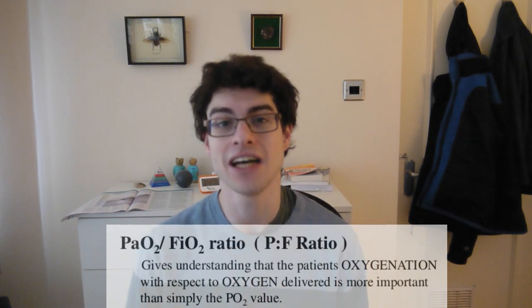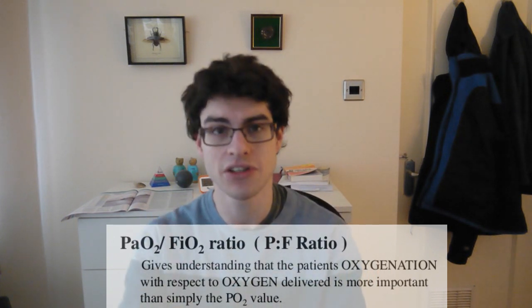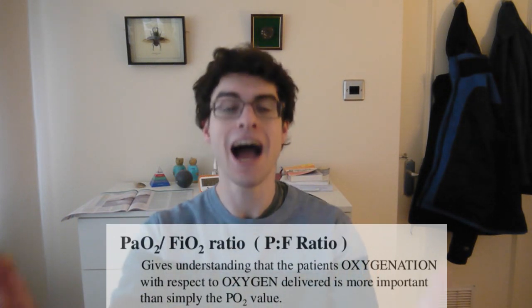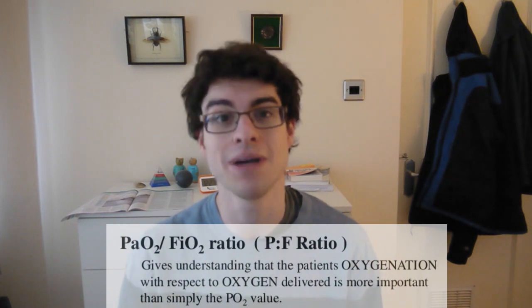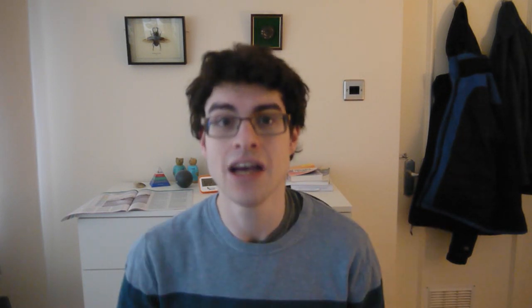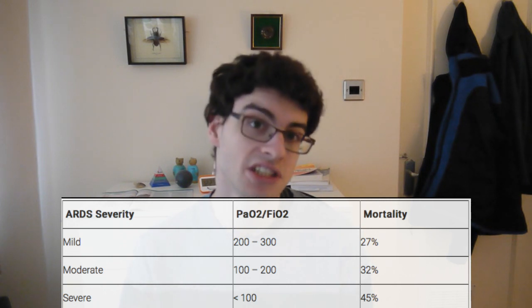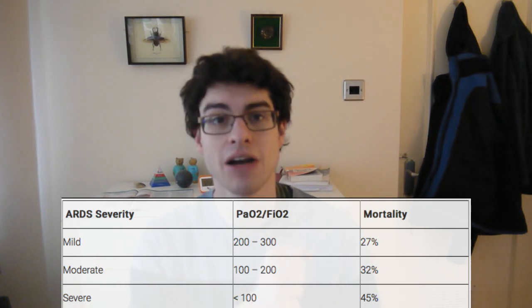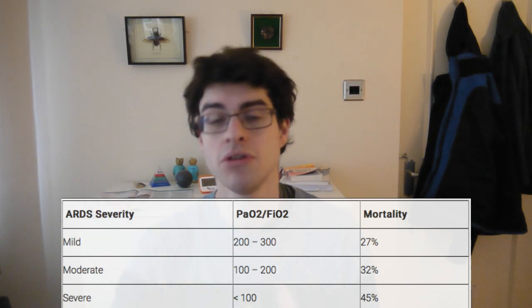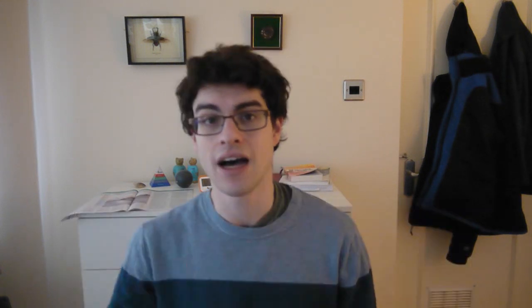The PaO2 to FiO2 ratio: out of all the percentage of oxygen in the air, how much of that is ending up in your arterial blood? It's therefore a good measure of shunting, and we use this as a criterion for acute respiratory distress syndrome. A PF ratio of 300 is mild ARDS, 200 is moderate ARDS, and 100 is severe ARDS.